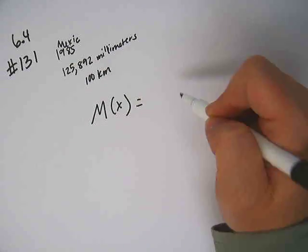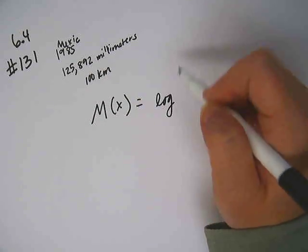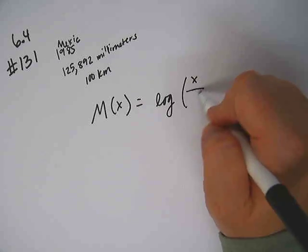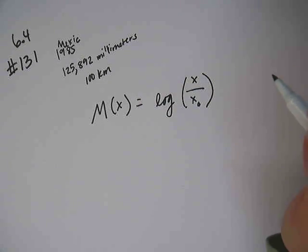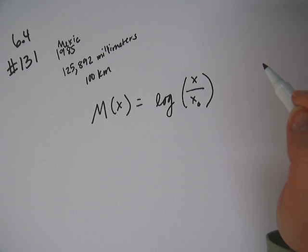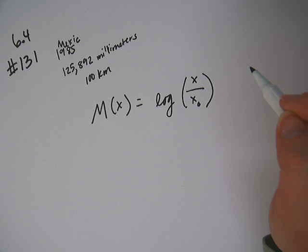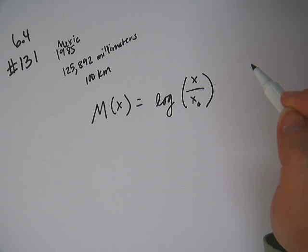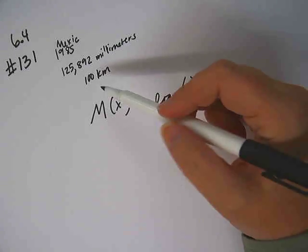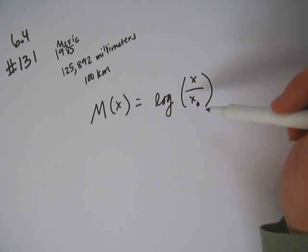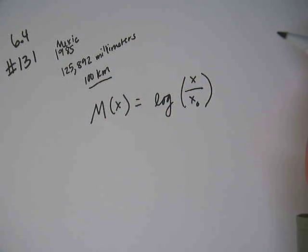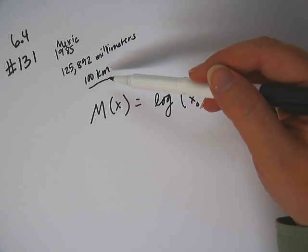We have a formula that says the log of x over x sub 0. X sub 0 is 10 to the negative 3 — that's the reading of a zero level earthquake the same distance from its epicenter. This equation has been formatted for 100 kilometers from the epicenter, so we don't have to do anything with the 100.